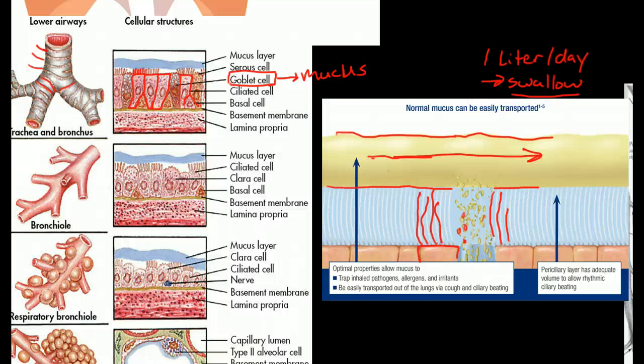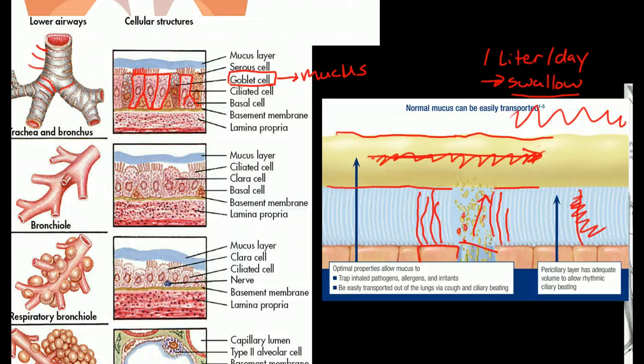In some diseases, people that smoke, for instance, actually lose these cilia, and at the same time, they hypersecrete mucus. So they end up with a thick, thick layer of mucus, but it doesn't move. It's a thick layer of mucus that doesn't move by itself.